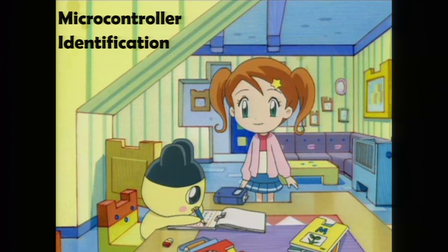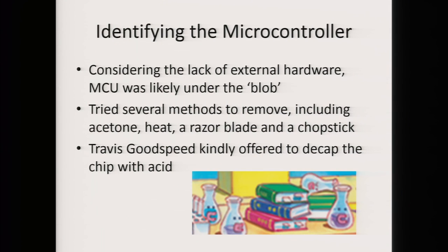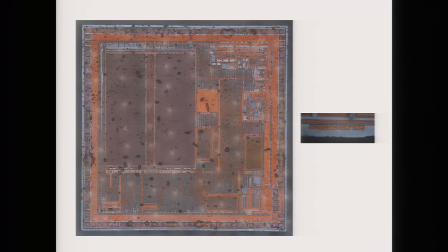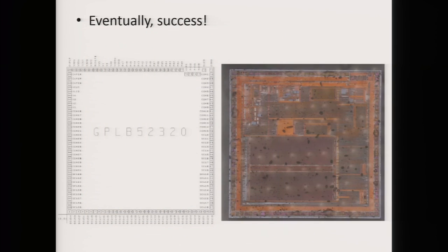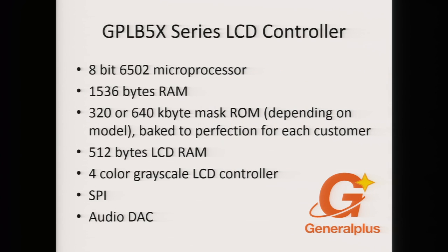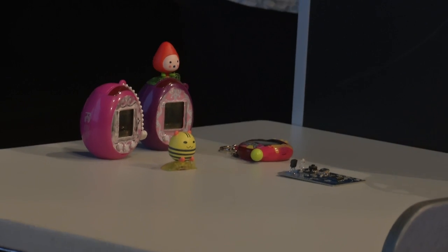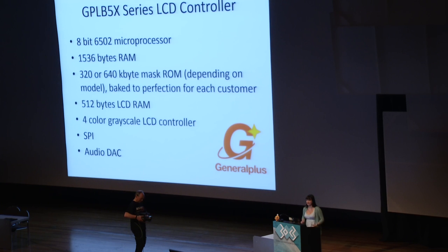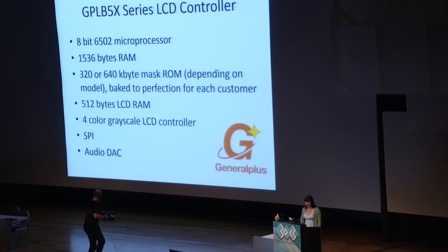The first thing I needed to do was identify the microcontroller. I tried many crazy, dangerous, and ineffective ways of removing the epoxy before Travis Goodspeed was kind enough to decap it with acid. After lots of looking, I managed to identify it — it's a General Plus LCD controller. The two most interesting things about it are that it runs 6502, like a Commodore, and that it has mask-ROM. The major con to mask-ROM is that I can never reprogram it — it's manufactured directly into the transistors, so it's ruled out permanently modifying the Tamagotchi in any way.